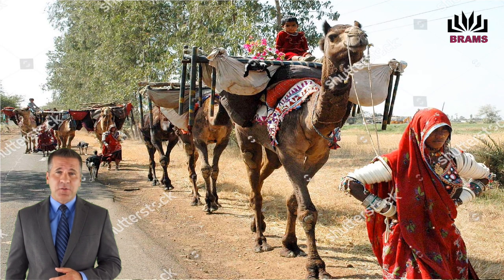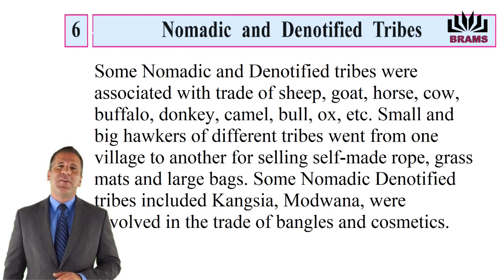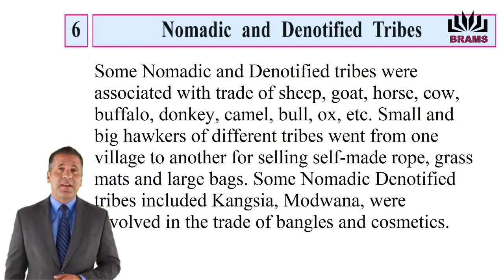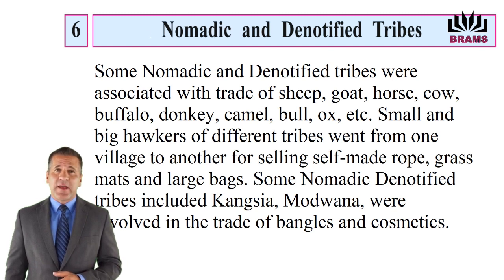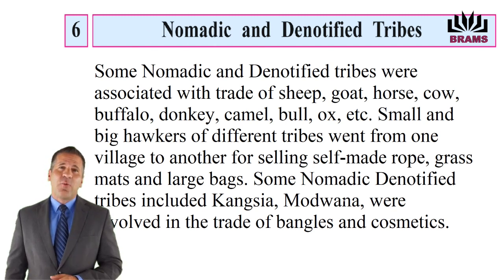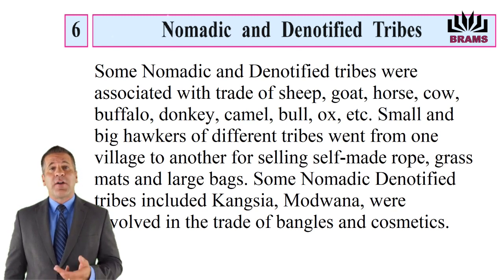Some nomadic and denotified tribes were associated with trade of sheep, goat, horse, cow, buffalo, donkey, camel, bull, ox, etc. Small and big hawkers of different tribes went from one village to another for selling self-made rope, grass mats and large bags. Some nomadic denotified tribes, including Kingsia and Modwana, were involved in the trade of bangles and cosmetics.